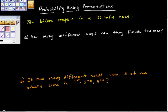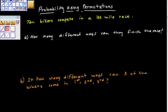Continuing our series on probability — probability using permutation. Just want you to remember that permutation is an order of events where order does not matter.